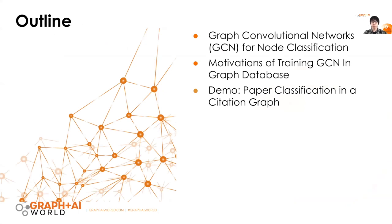Here is the outline for today's session. I know there's a mix of audience here — there may be some graph experts that may not be very familiar with machine learning. So first, I will briefly talk about how GCN works, and then I'm going to talk about why you want to train your graph convolutional neural network in a graph database and how to do that. And lastly, I'm going to give you a demo of using TigerGraph to train the GCN for paper classification in a citation graph.